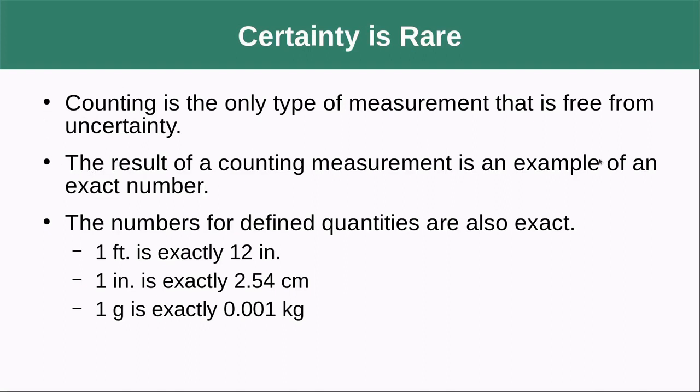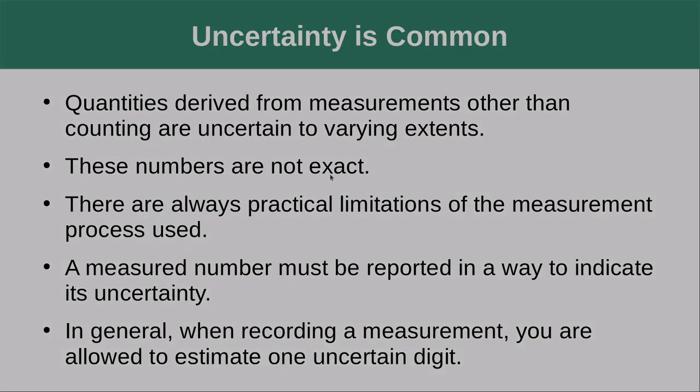The result of counting measurement is an example of an exact number. The numbers for defined quantities are also exact. For instance, one foot is exactly 12 inches because we said one foot is exactly 12 inches, and we can say that one inch is exactly 2.54 centimeters just because we say that this is true. So we can define things to be exact or we can count them. Other than that, all numbers have some level of uncertainty with them.